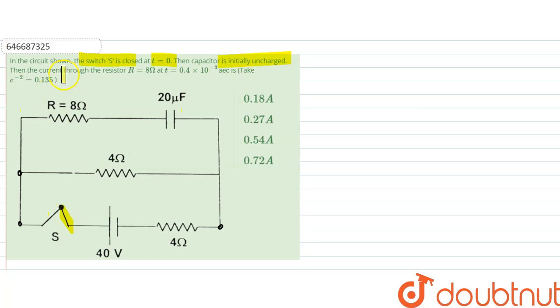The capacitor is initially uncharged. Then the current through the resistor R equals 8 ohm at t equals 0.4 into 10 to the power minus 3 seconds is how much? e power minus 2 is given as 0.135.